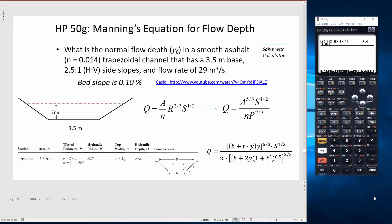I'm going to work through a quick example to illustrate how the HP50G calculator can be used to solve Manning's equation when you have a trapezoidal channel geometry. I previously showed some demos on how to do that using the Casio calculator, so this is just to show you another option that's out there.